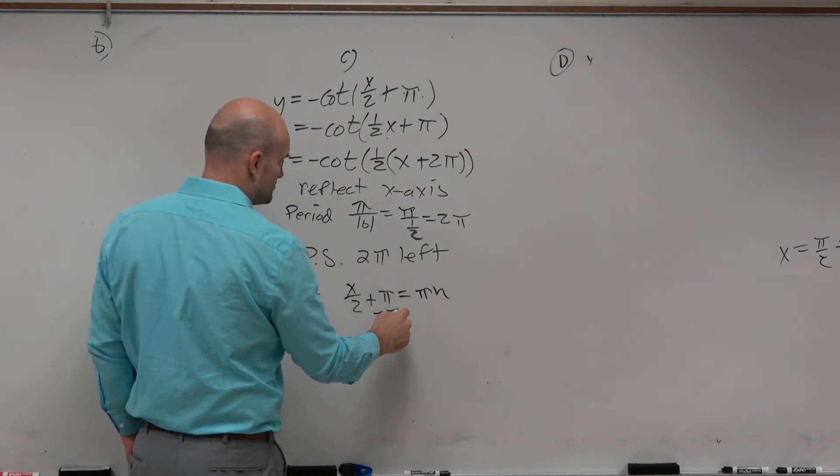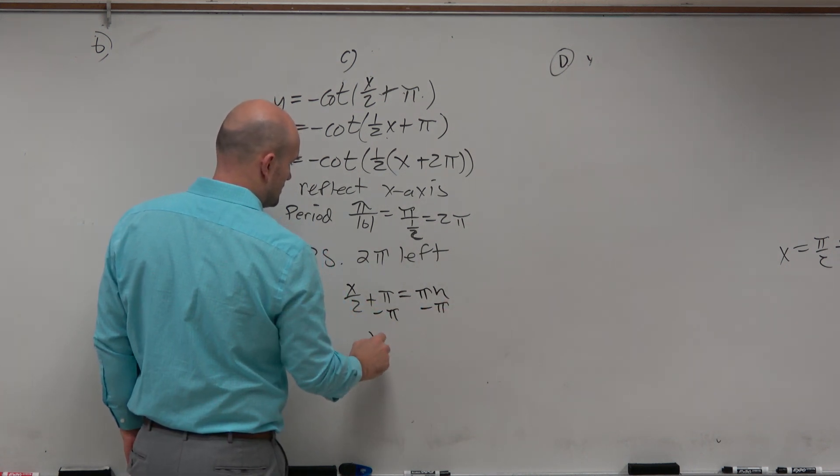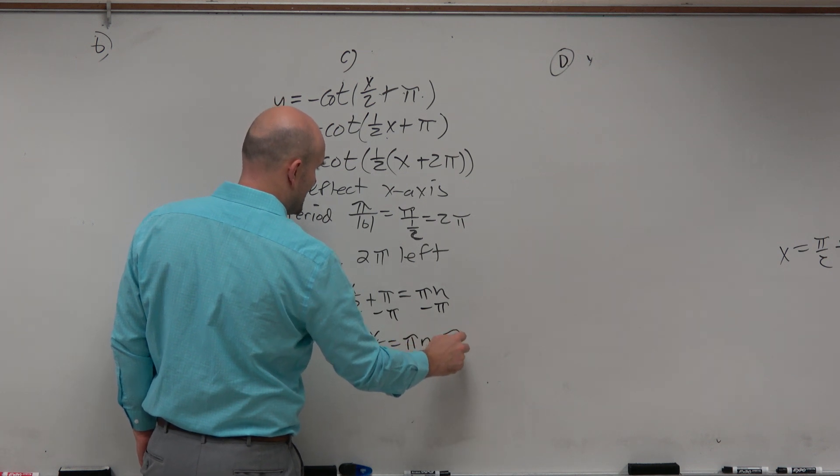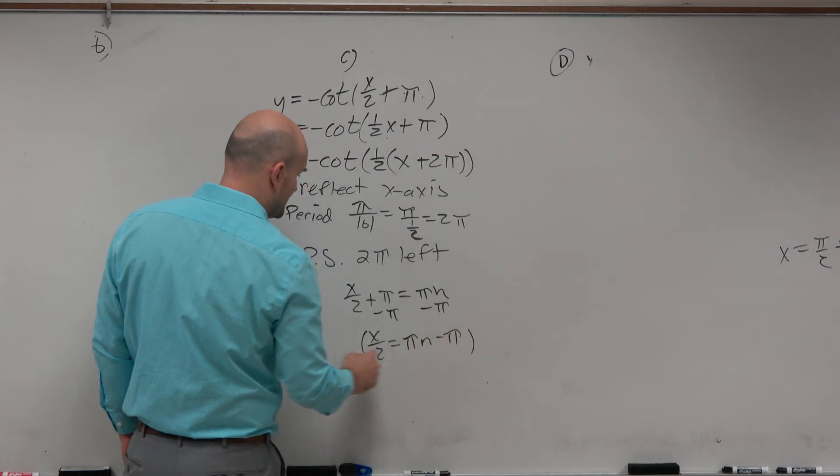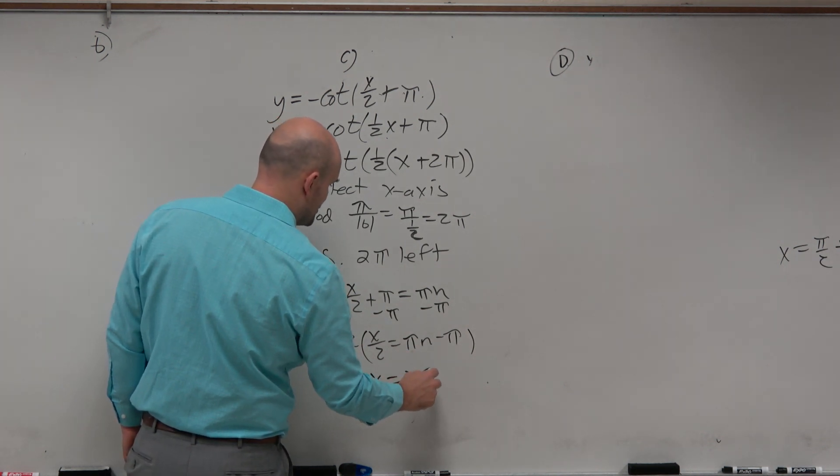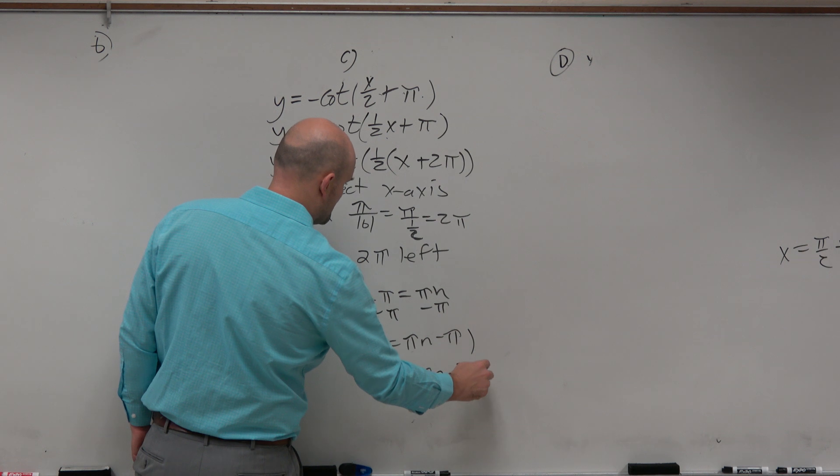So again, you can subtract here. x over 2 equals pi n minus pi. They're not like terms, so you can't subtract them. And this is kind of like that first example I did today. Multiply everything by 2. x equals 2 pi n minus 2 pi.